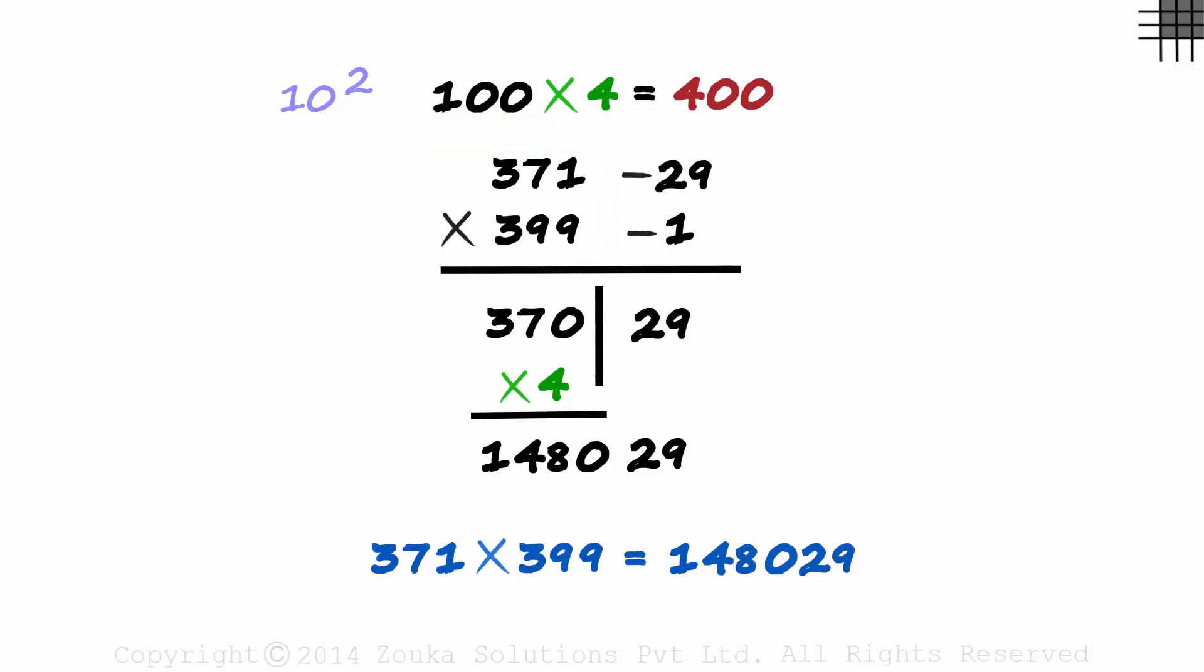These were the examples when the base is a multiple of power of 10. Here it was a multiple of 10 squared or 100. The only additional step here was to multiply the number on the left hand side with the multiplying factor. We will look at a couple more examples in the next part of the session. We will be right back.